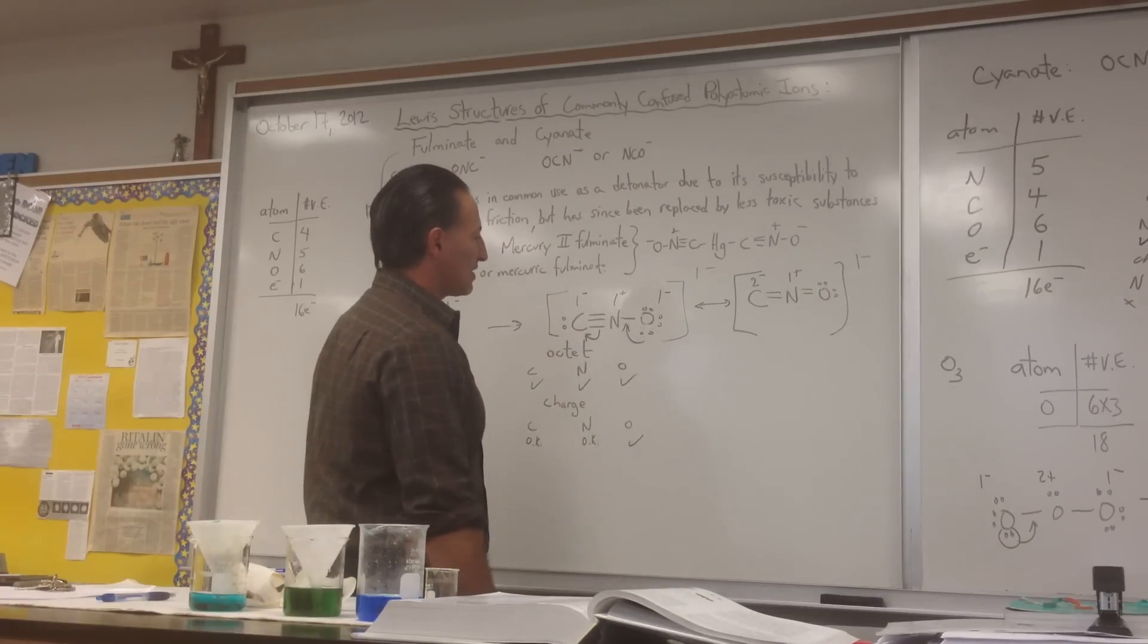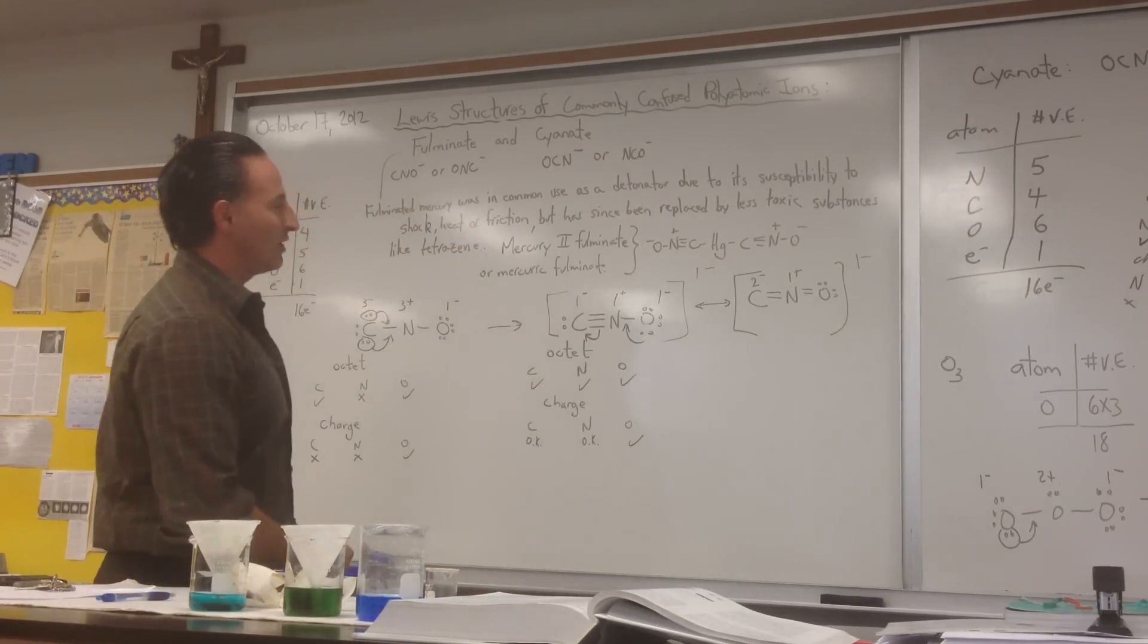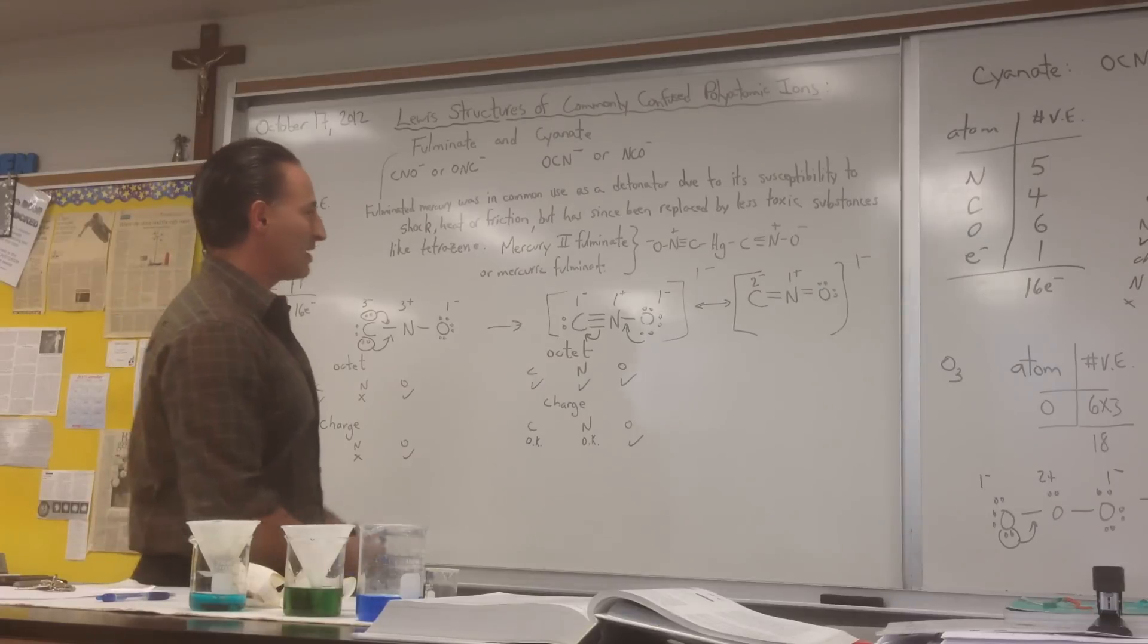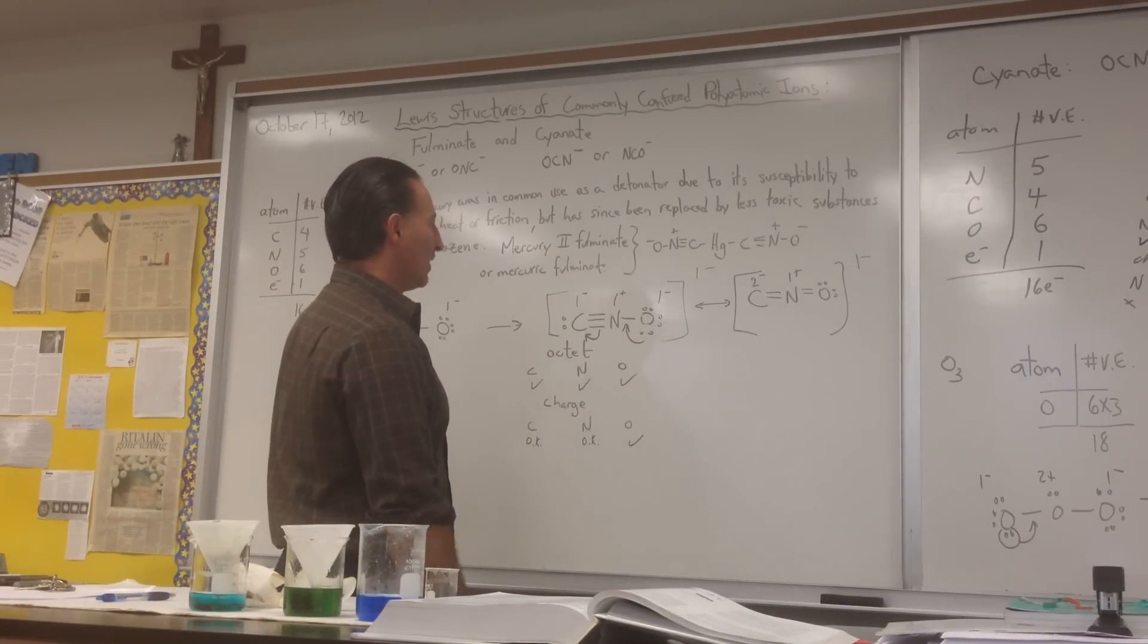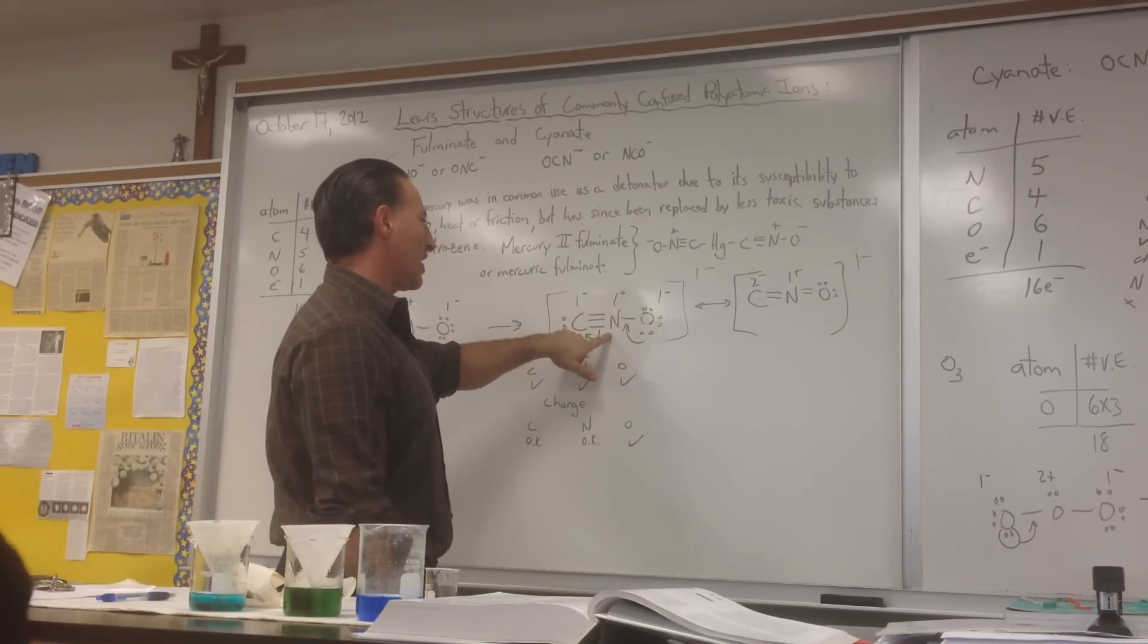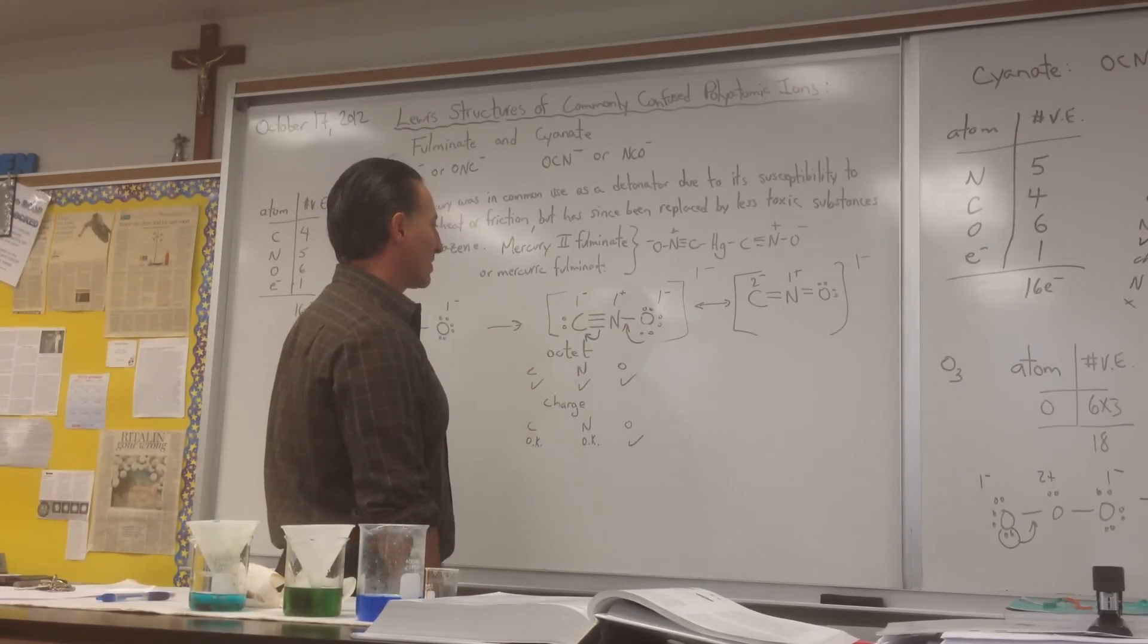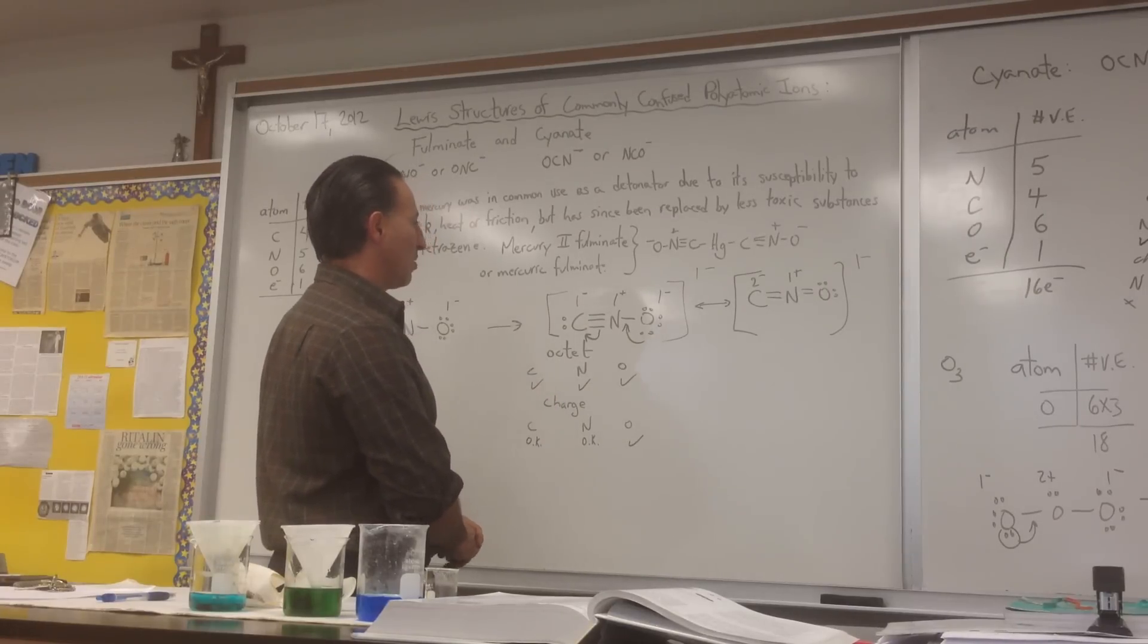This is the best Lewis structure we can draw for fulminate, and it gives you an understanding of why it's an explosive substance. It's basically playing hot potato with the few electrons that it has, and it has a highly electronegative oxygen atom, a highly electronegative nitrogen atom, so that helps stabilize it to some extent, but not completely. There are formal charges that have to be dissipated in this molecule.